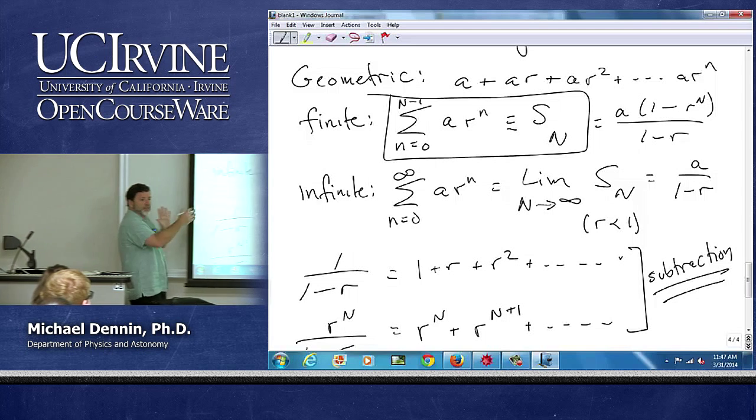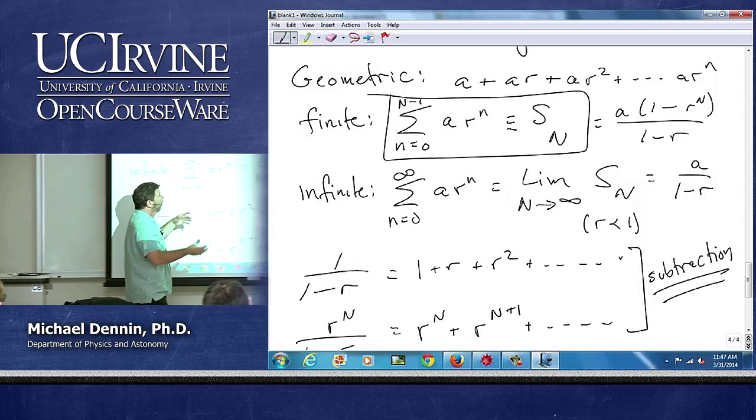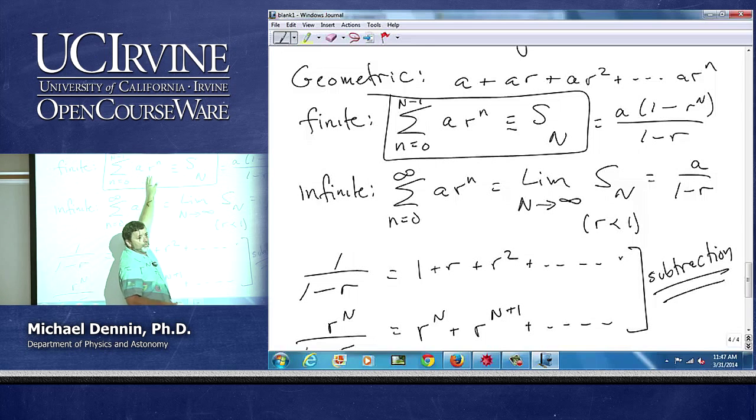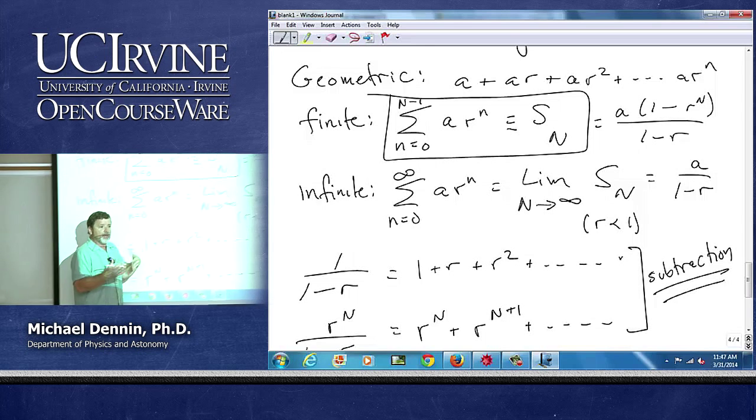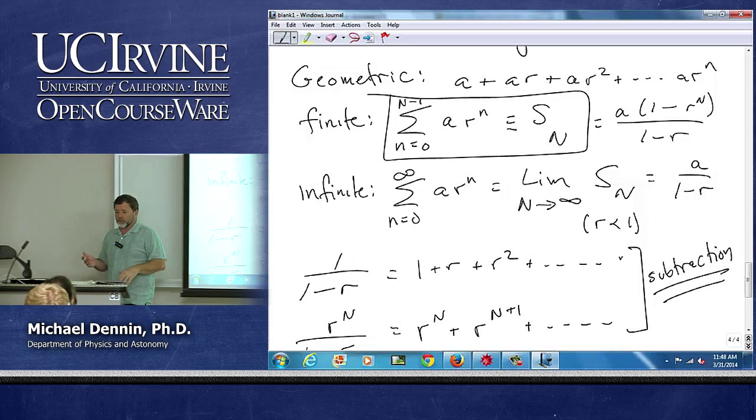A common one, the homework problem you have is stuff bouncing around in a box and a certain fraction escapes each time. So that ends up being your r, which is less than 1 because it's a fraction escaping, so this series will converge and you can find out how much stuff is where you want it.